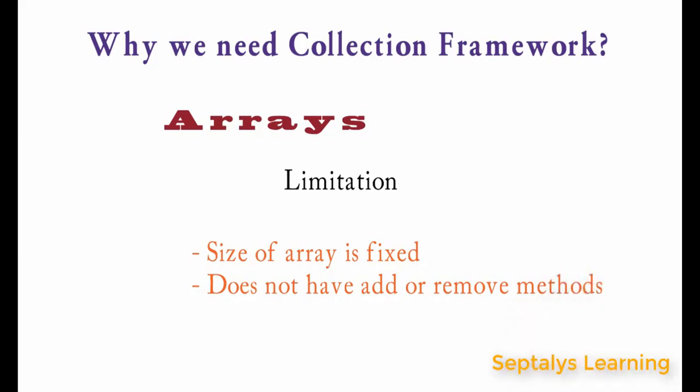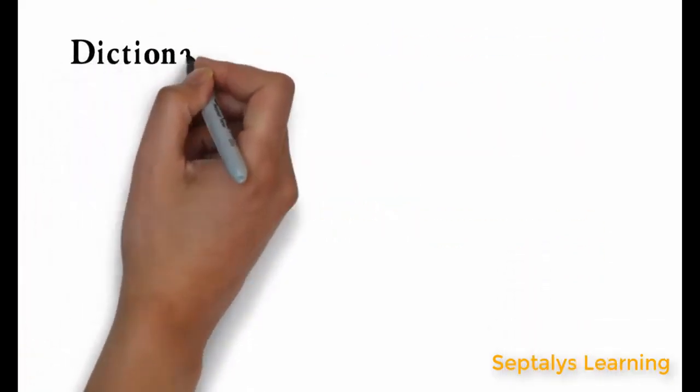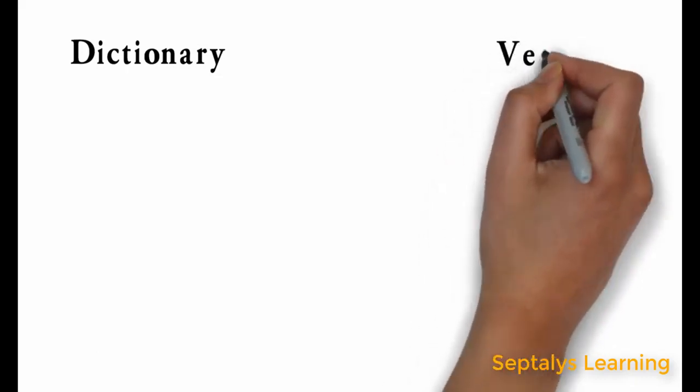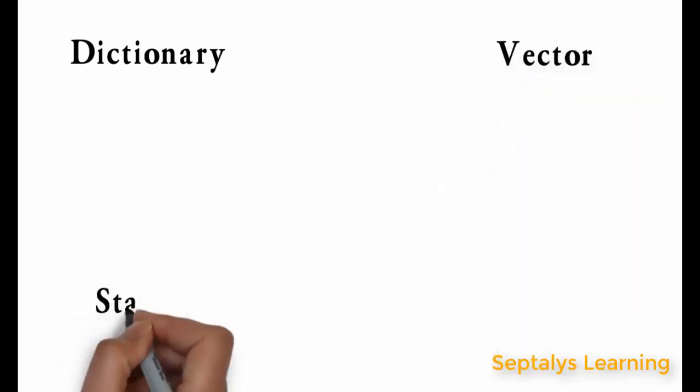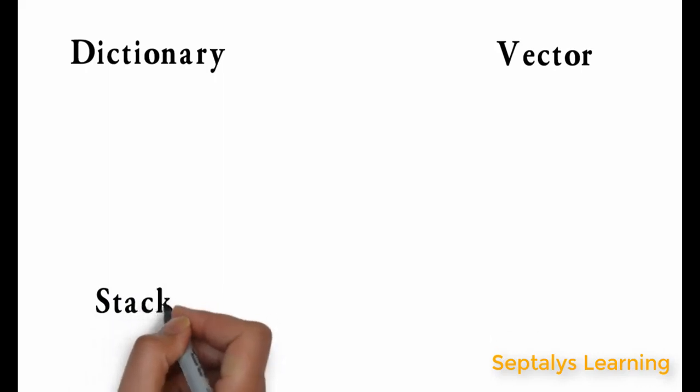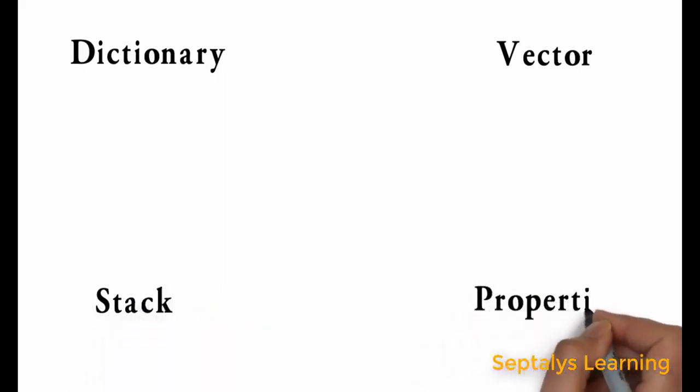We also have dictionary, vector, stack and properties classes which handle groups of objects better than arrays. But each of them handles objects differently.